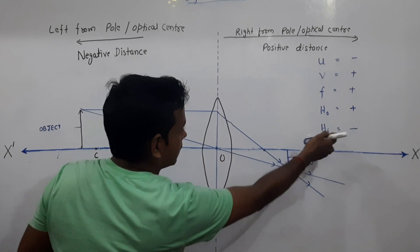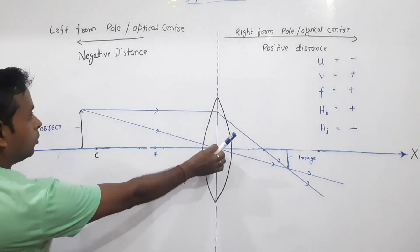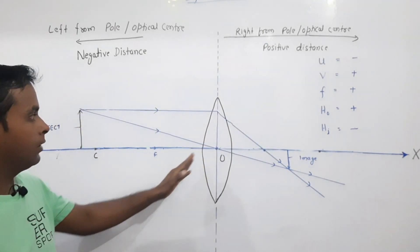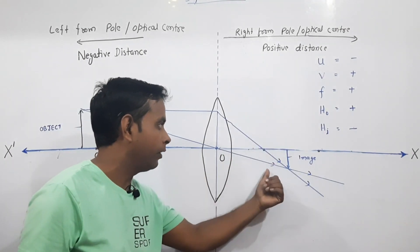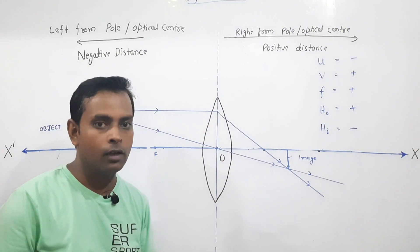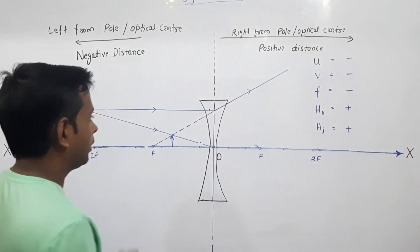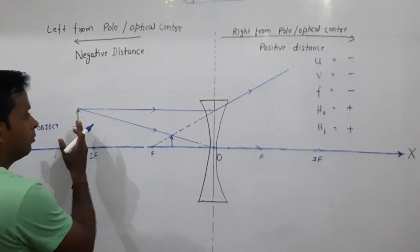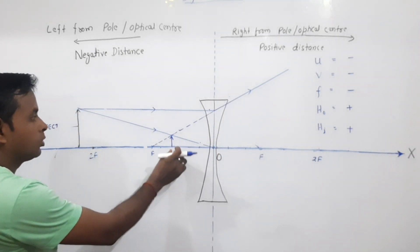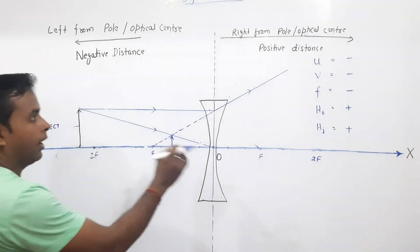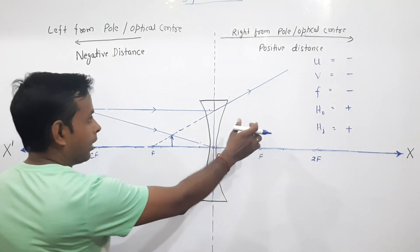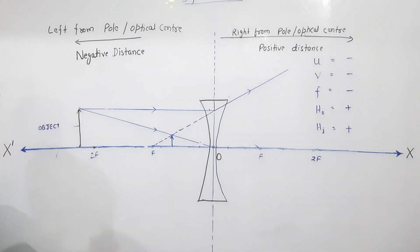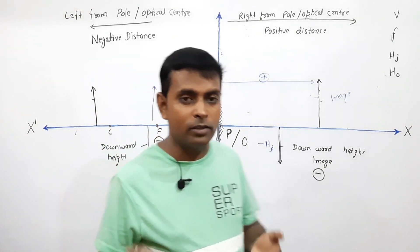For a convex lens: the height of the image is negative since the image is inverted. u is negative because the object is placed to the left of the lens. v is positive and f is positive because they are to the right of the lens. For a concave lens: u is negative, v is also negative because the image is formed to the left of the lens, f is negative, height of object is positive, and height of image is also positive.